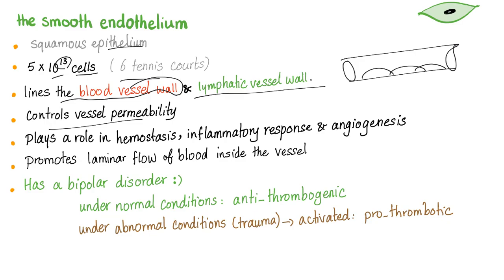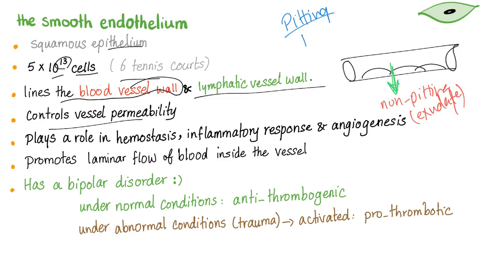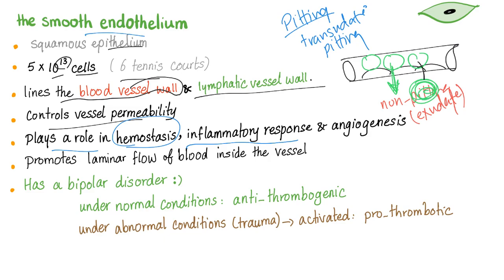The endothelium controls vessel permeability. Pus represents increased permeability and is non-pitting — it's an exudate. On the other hand, pitting edema due to congestive heart failure is a transudate. The endothelium plays a role in hemostasis and inflammatory response. If you remember inflammation, neutrophils roll over the endothelium until they find inflammation in the tissue, then escape the vessel lumen to fight bacteria.